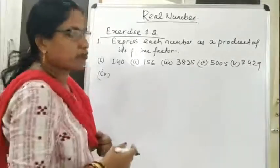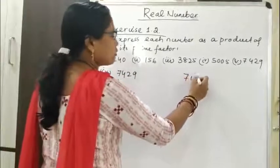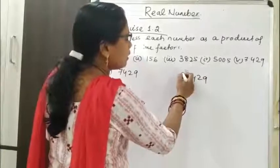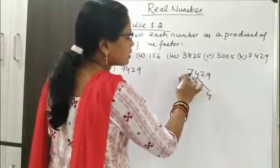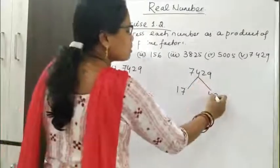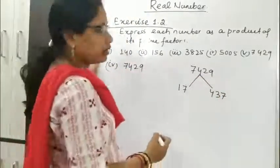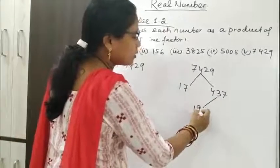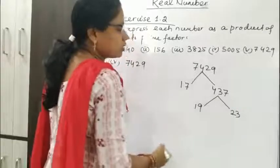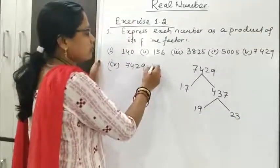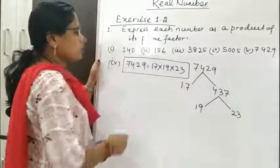Now the fifth number, 7429. 7429 is divisible by 17, giving 437. Then 437 is divisible by 19, giving 23. And 23 is a prime number. So 7429 = 17 × 19 × 23. This is the prime factorization of 7429.